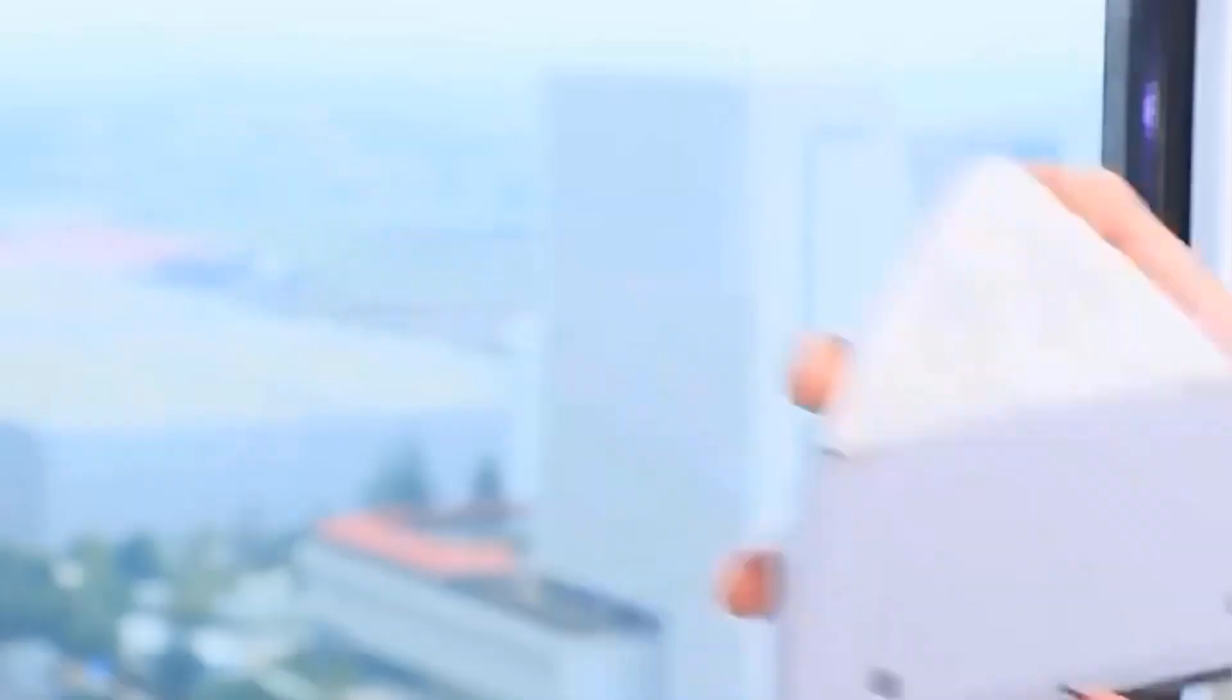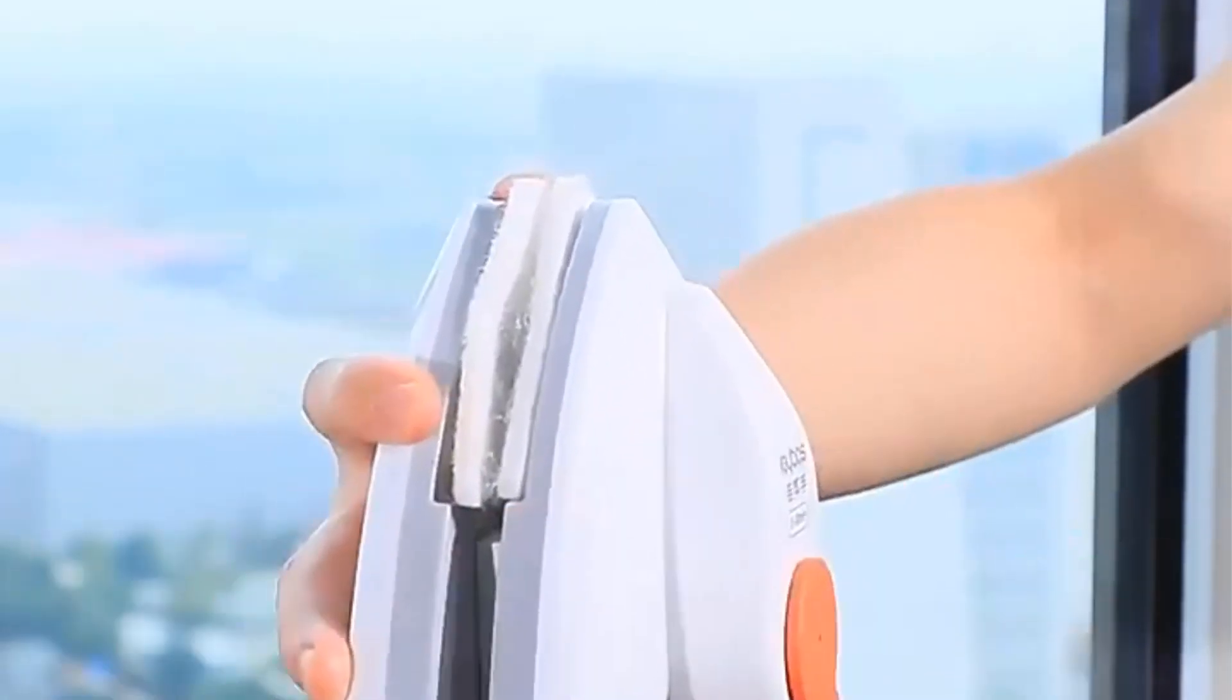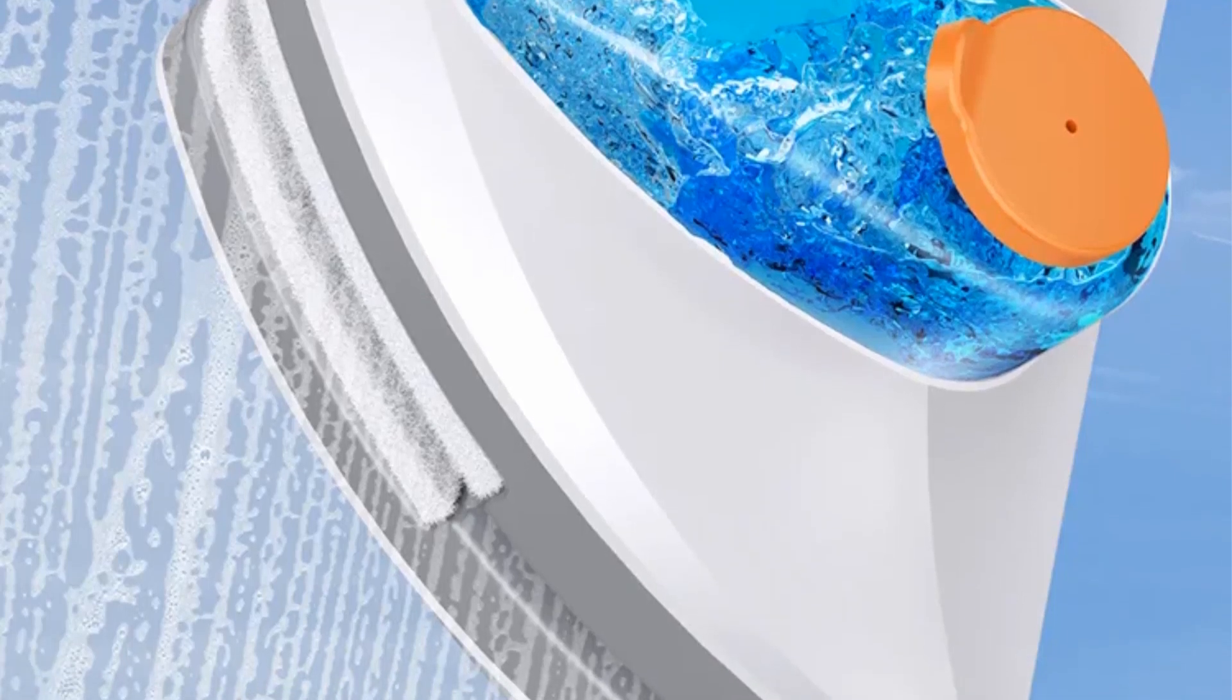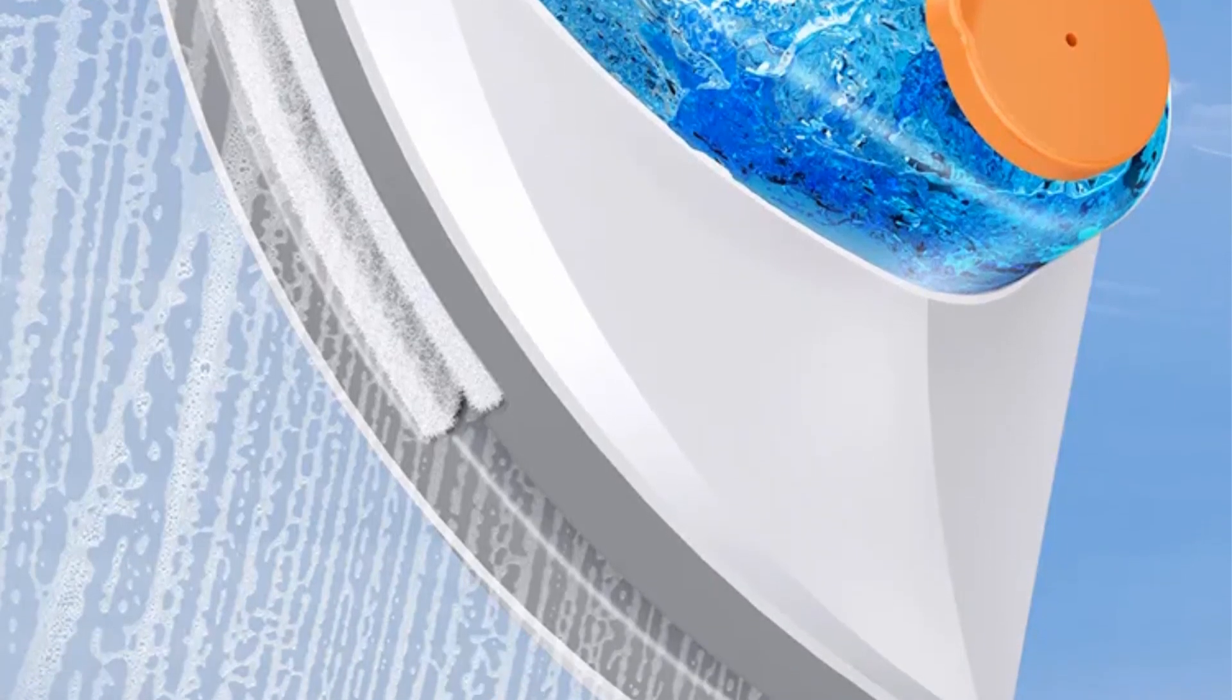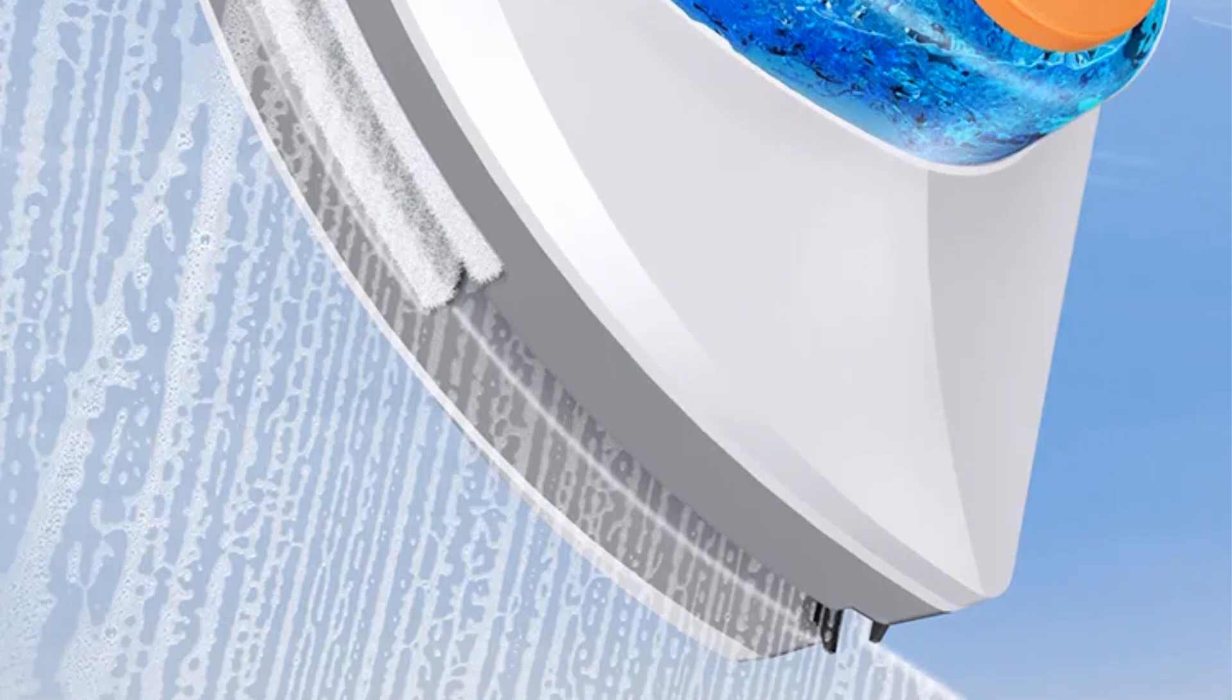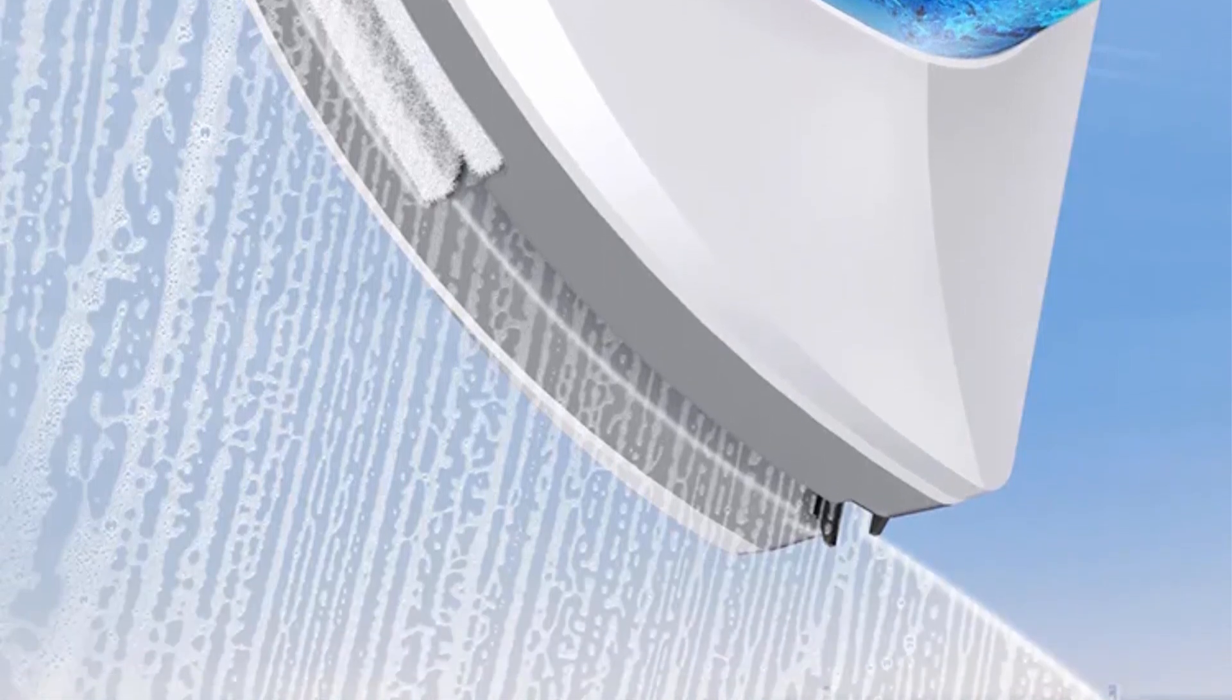Designed to accommodate glass thickness ranging from 3 to 32 millimeters, the Magnetic Window Double Side Cleaner is versatile and suitable for various window types commonly found in households. Its adjustable nature ensures compatibility with a wide range of window sizes, making it a versatile cleaning tool for homes.